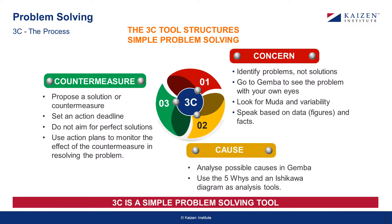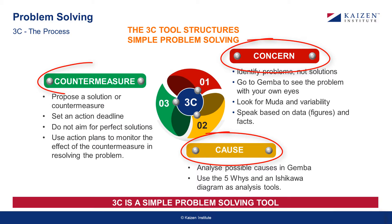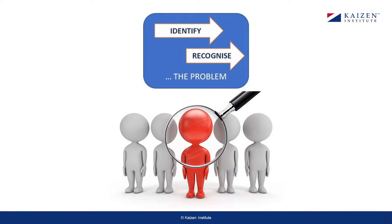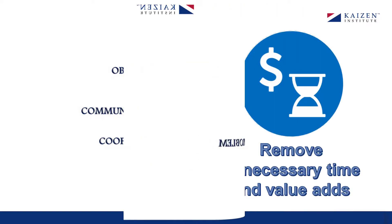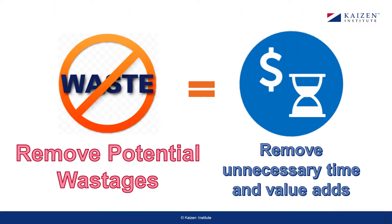The 3Cs are Concern, Cause, and Countermeasure. The concern relates to the identification of the problem. You have to walk to the place where the problem is arising, observe and recognize the problem. Correctly assessing a problem is possible only by direct observation. We have to look for potential wastages, identify and remove them. The waste adds unnecessary time and cost to a process.